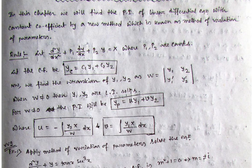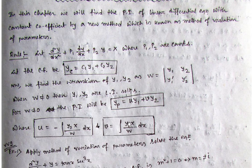Whenever the Wronskian is not equal to zero, we can apply the method of variation of parameters, and the particular integral will be u·y1 plus v·y2. The y1 and y2 are already found from the complementary function; simply y1 is multiplied by u and y2 by v — that is our yp. Now u and v are two unknown functions of x. The method gives: u equals minus integration of (y2·X / Wronskian) dx, and v equals integration of (y1·X / Wronskian) dx.